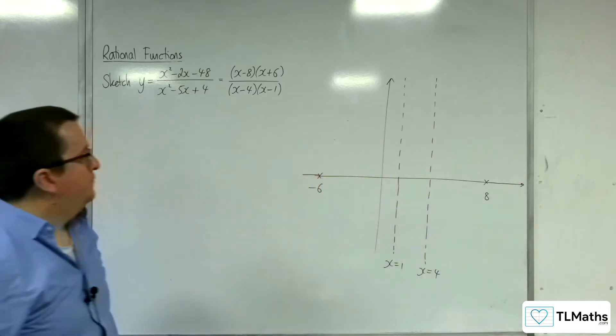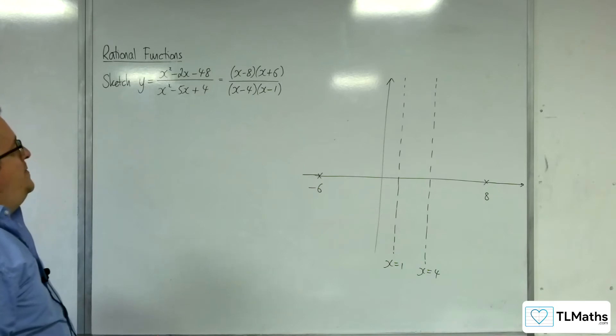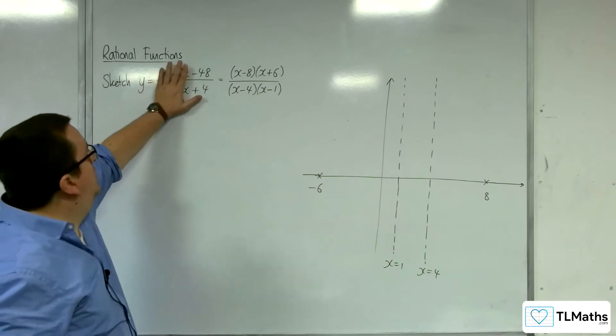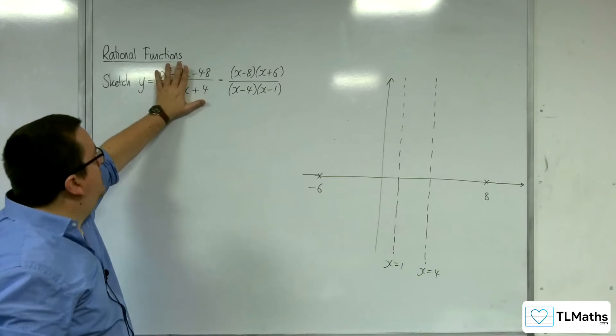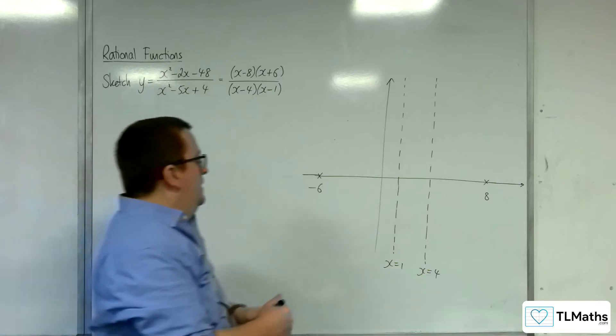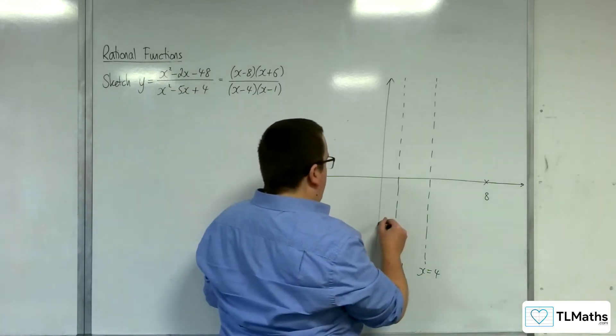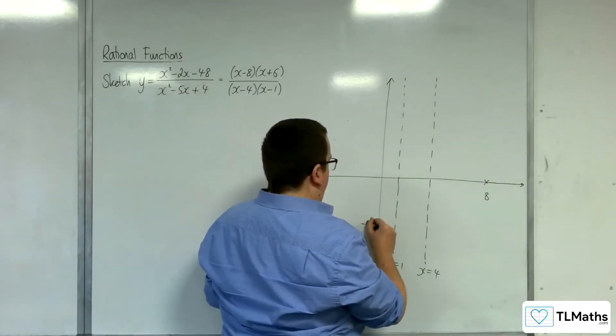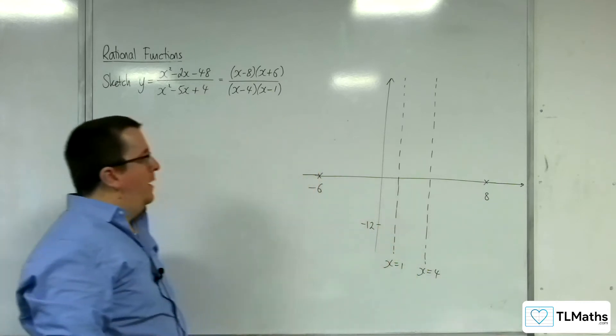How about where it crosses the y-axis? That's going to be when x is 0, so we're going to have minus 48 over 4, and so that's minus 12. So somewhere down here is where it's crossing the y-axis.